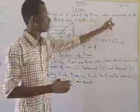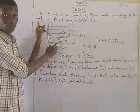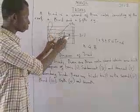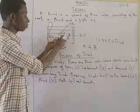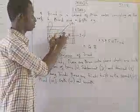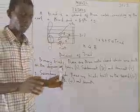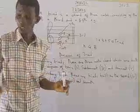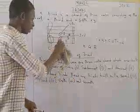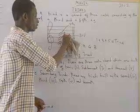The triad is a chord of three notes consisting of the root — the first one, number one — the third, and a fifth.